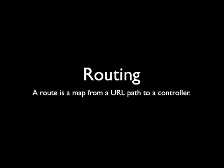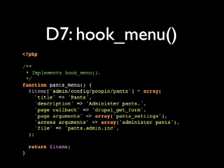So, routing. A route is just a map from a URL to a controller. Here's an example of a D7 hook_menu, borrowed from the pants module. You have the path admin/config/people/pants, a title, a description to administer pants, page callback Drupal_get_form, page arguments pants_settings, access arguments administer pants, and a callback in a separate file.